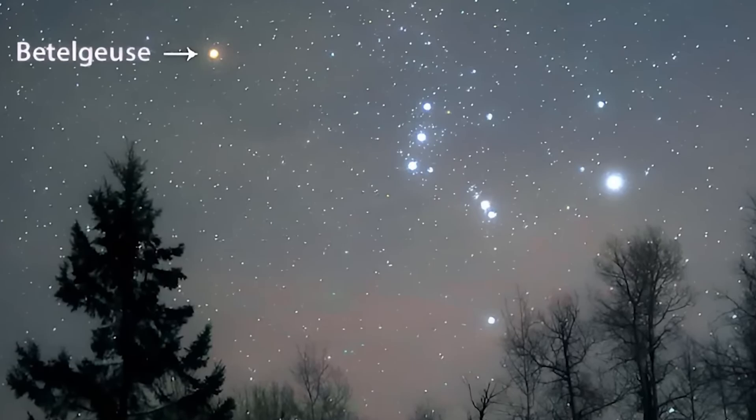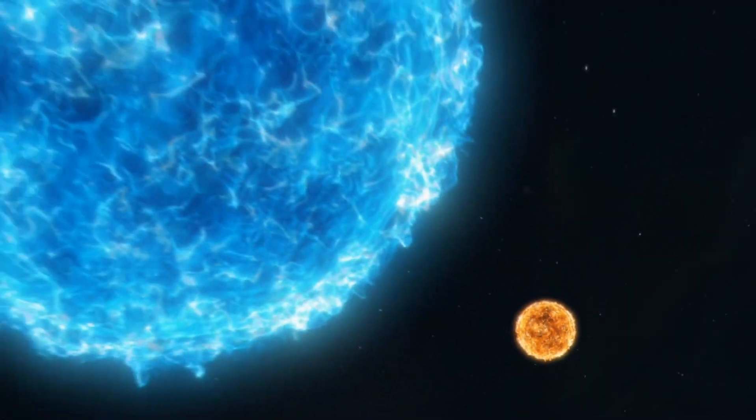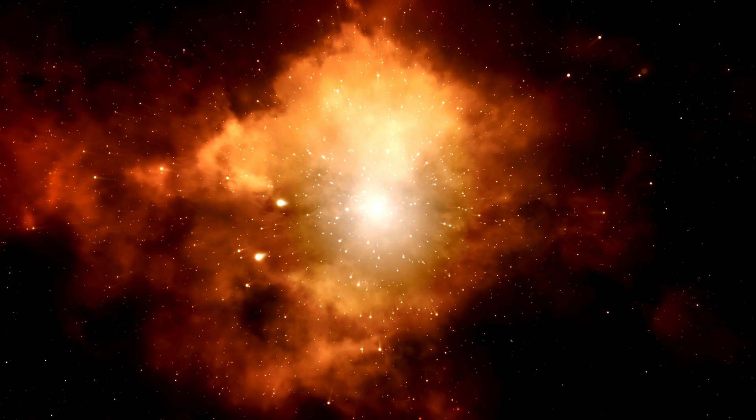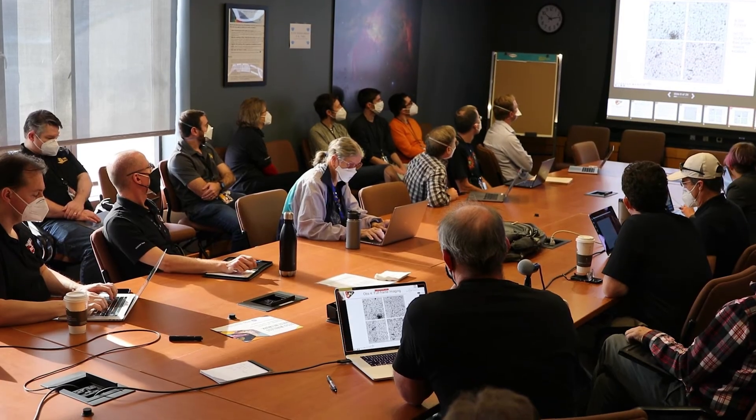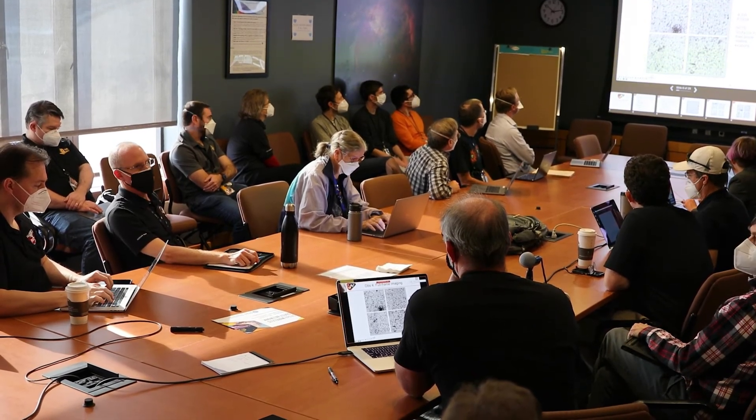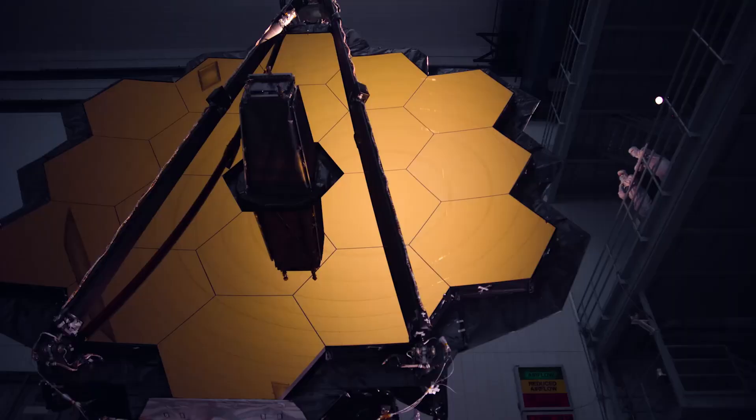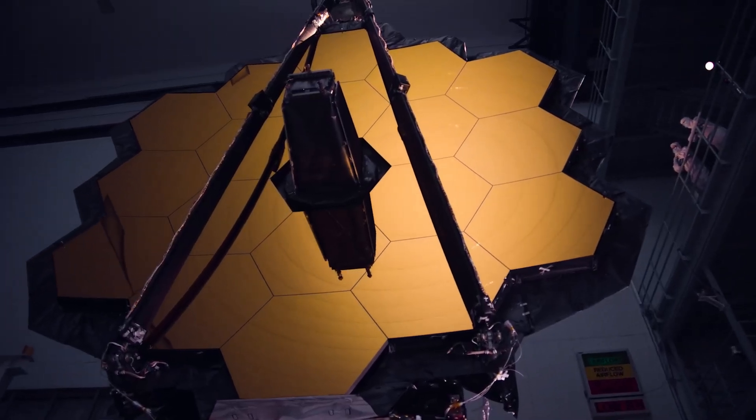Betelgeuse is an interesting target for astronomers to observe and study because of its variable behavior and peculiar name. Alpha stars are usually the brightest in their constellations, and this is true even though Rigel, Orion's other great star, is brighter.